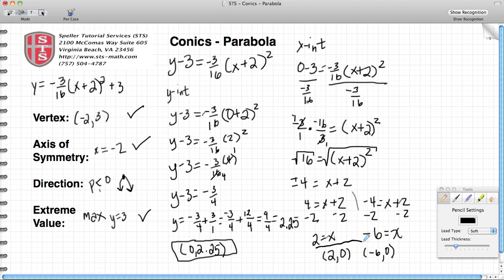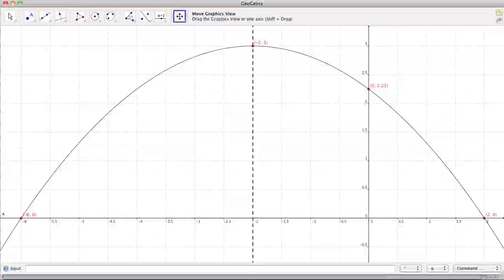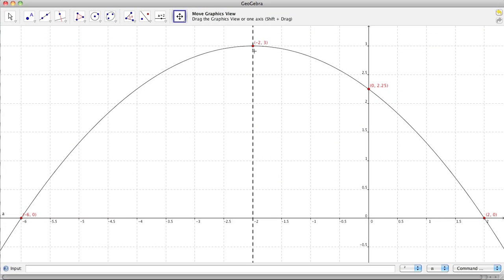Now what I'm going to do is flip over to a graph that I have here. And on this graph, I'm going to take a look to verify those values. We see up here that our vertex is negative 2, 3, like we stated previously on the other page.